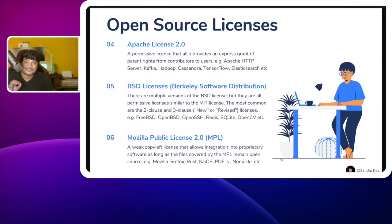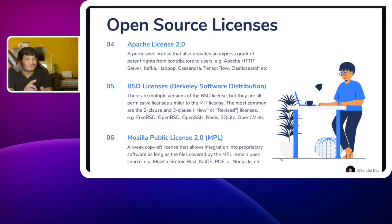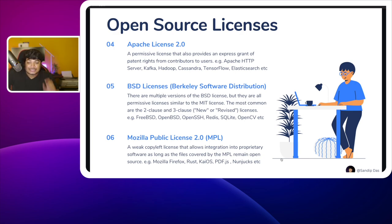The fourth license is the Apache License 2.0 — a permissive license that also provides an express grant of patent rights from the contributor to the user. It allows users to use, edit, view, share, and exercise all permissions. Examples include Apache HTTP Server, Kafka, Hadoop, Cassandra, TensorFlow, and Elasticsearch.